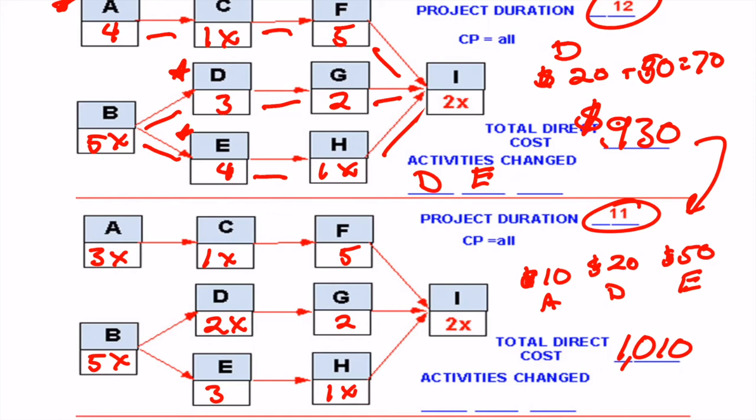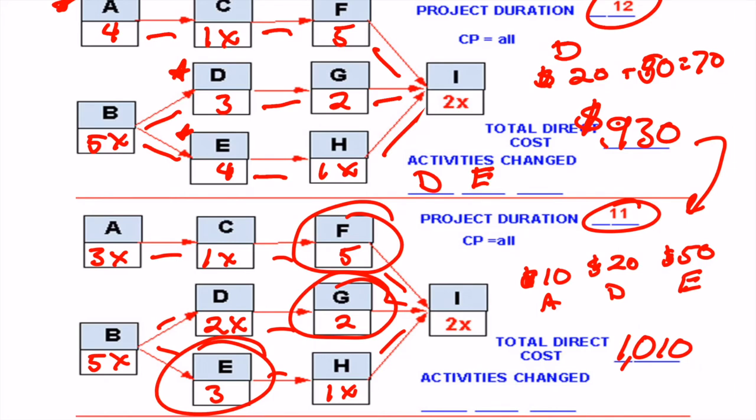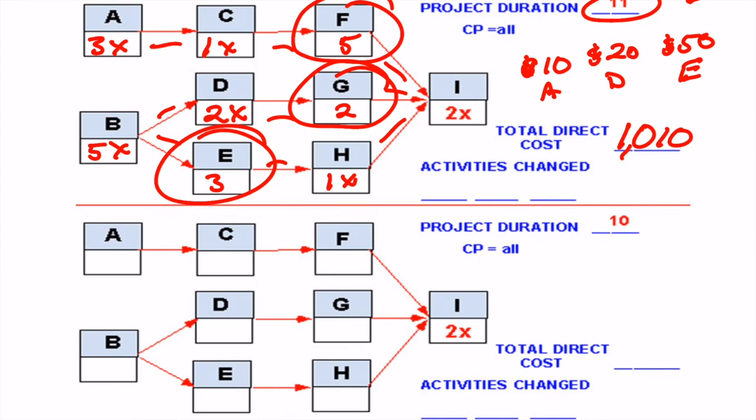We're going to keep on going and see if we can go any farther. We're getting limited options now. We still have everything as critical. So every task here is critical, so something from each of these three particular paths that we have is going to have to be crashed. So we only really have one candidate on each: we have F on this path, we have G on this path, and we have E on this path. So we can go ahead and do those. We'll do that here. F down by 1. E is now down to its maximum crash time. And basically we're done at this point. We can't crash these paths down here.